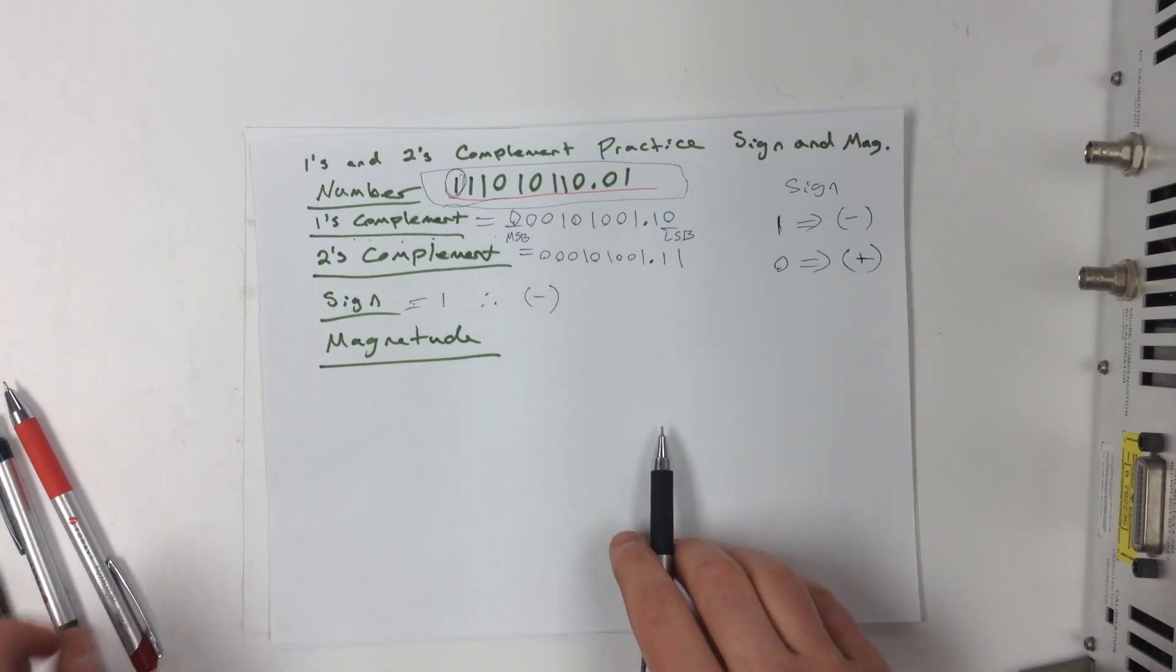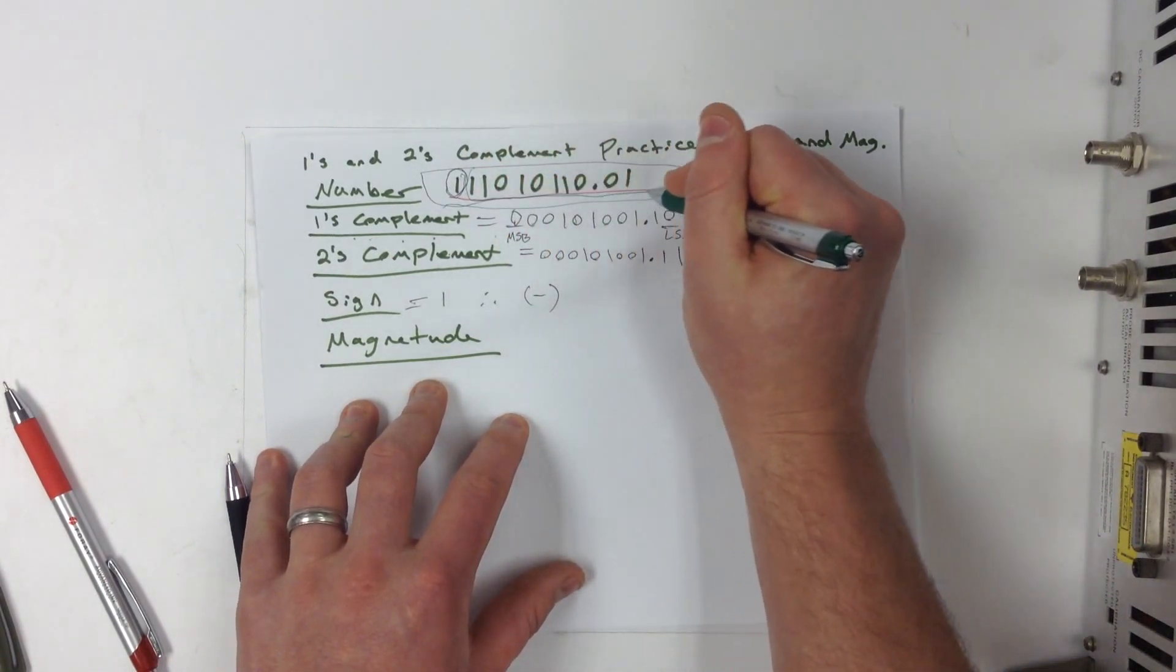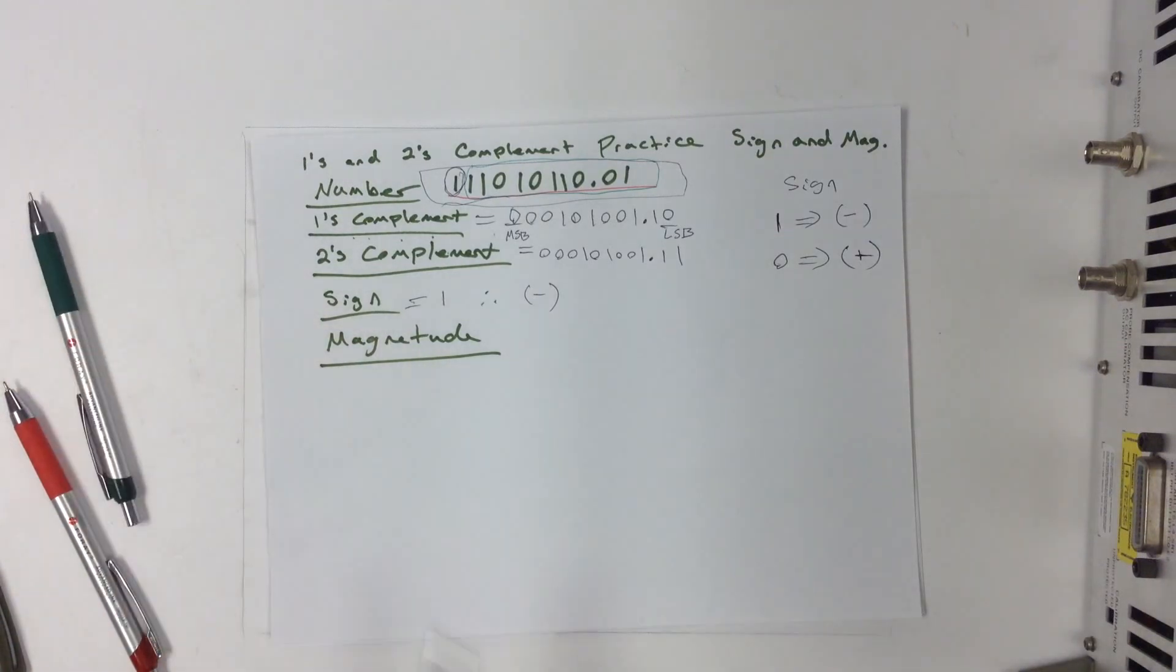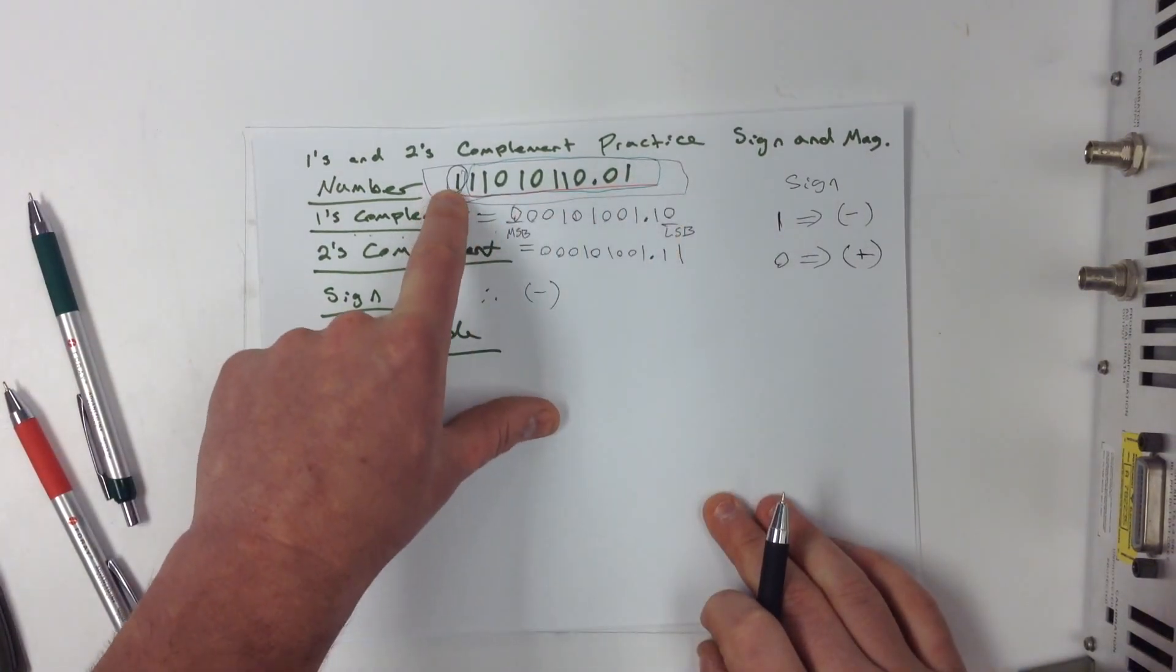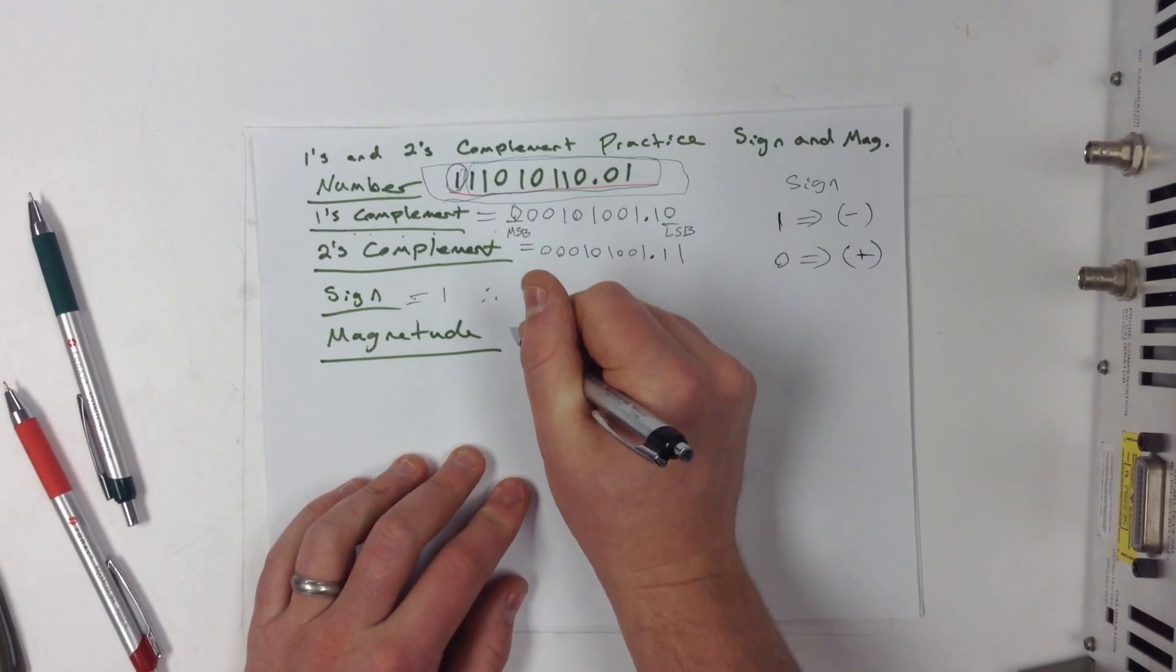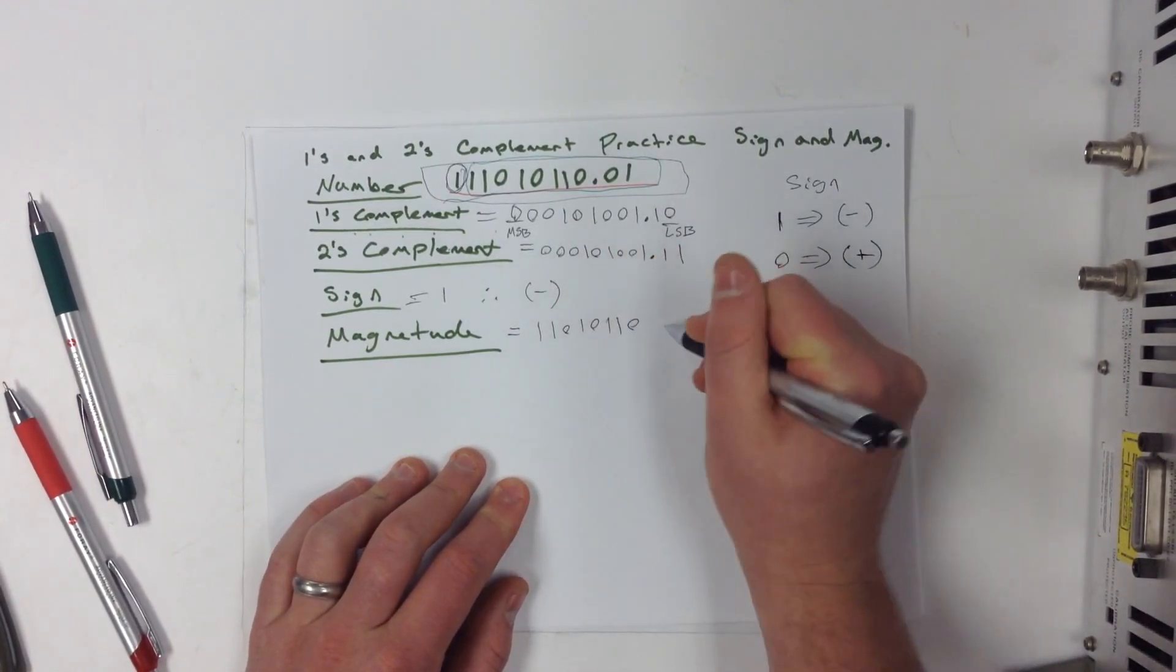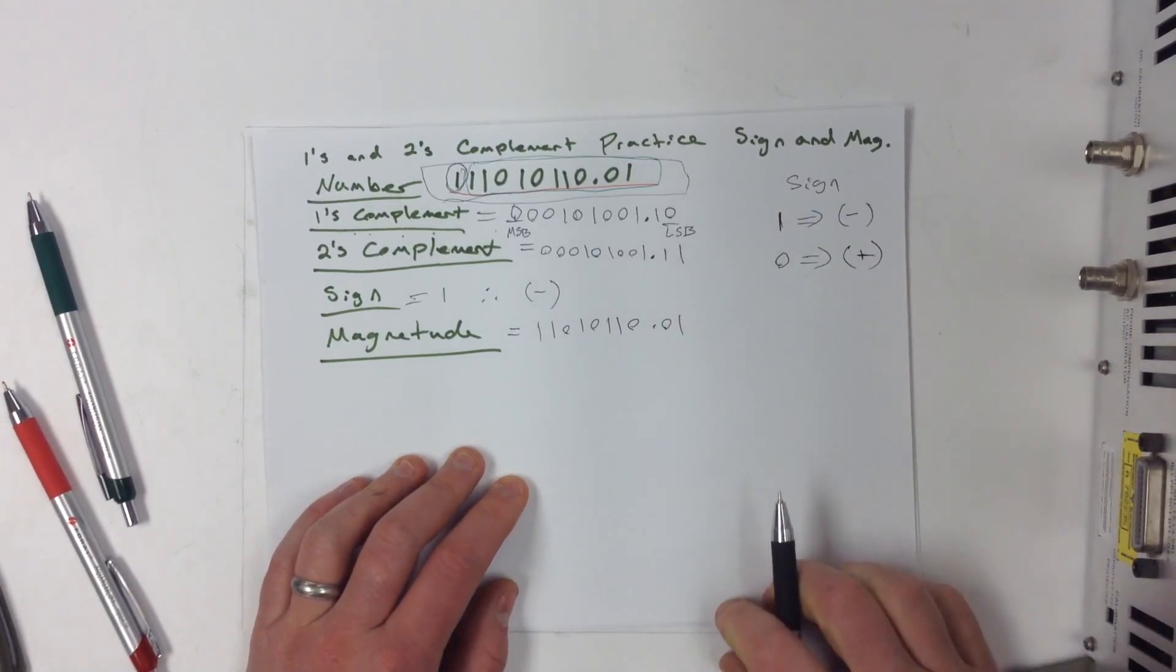Now, the magnitude, the magnitude is given by all the numbers after that first bit. This is just in sign and magnitude form. But the magnitude is always given with all the numbers after that sign bit. So we know it's a negative number, and then we know that this is the magnitude after it. So let's go ahead and write down this number in magnitude form. And it's just that easy, guys.